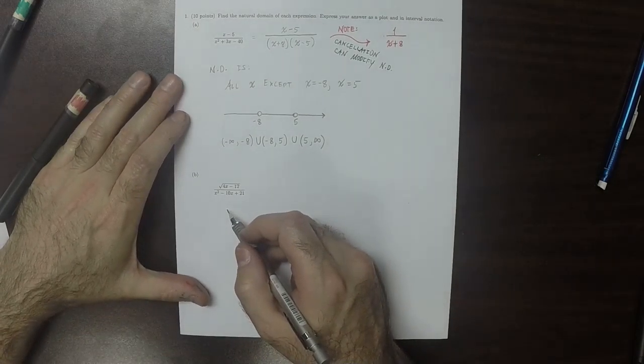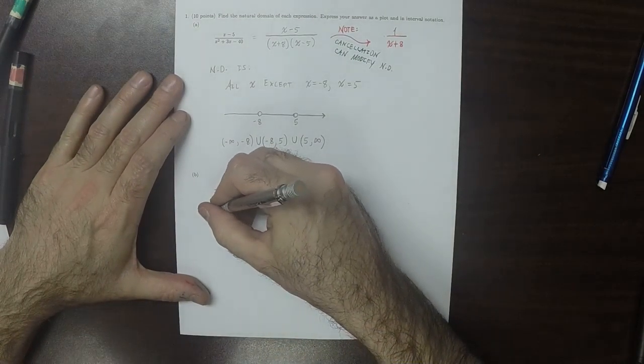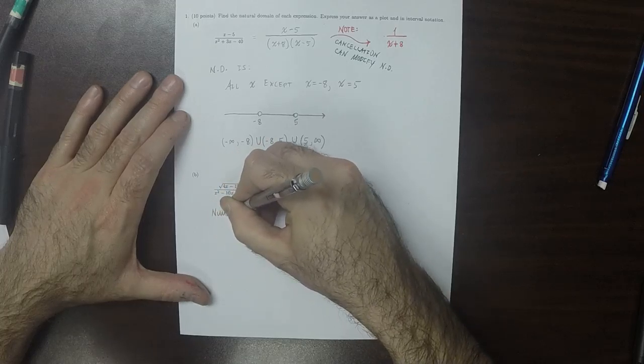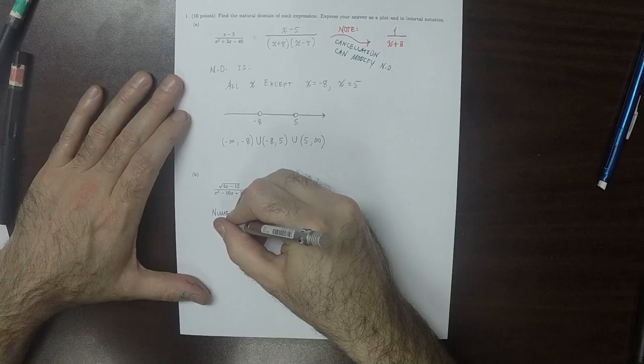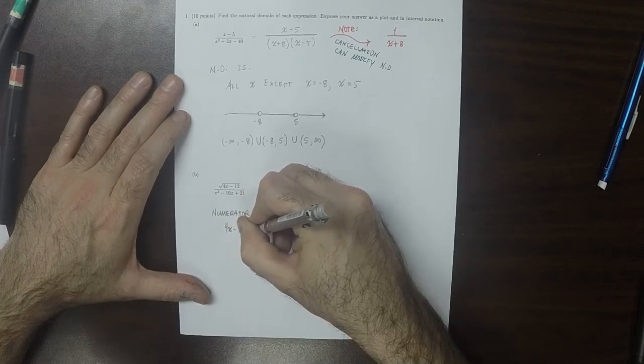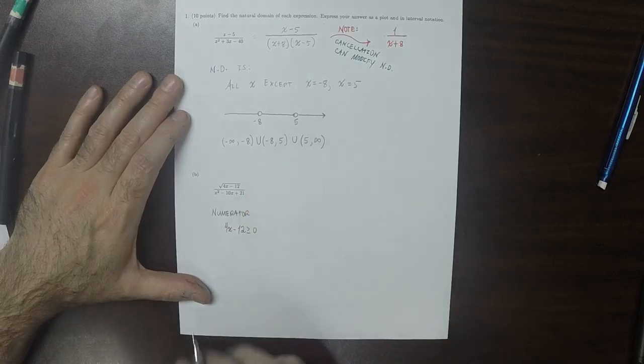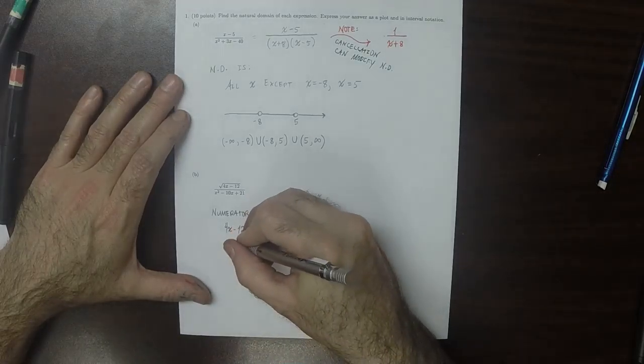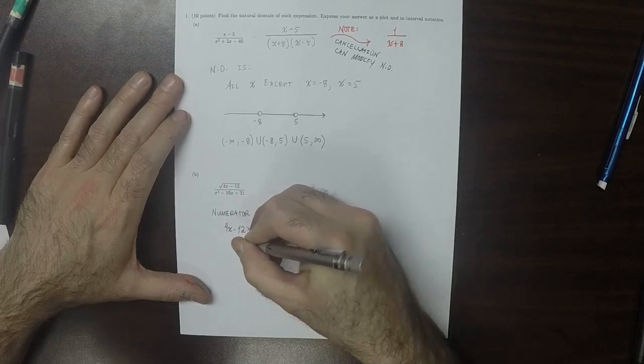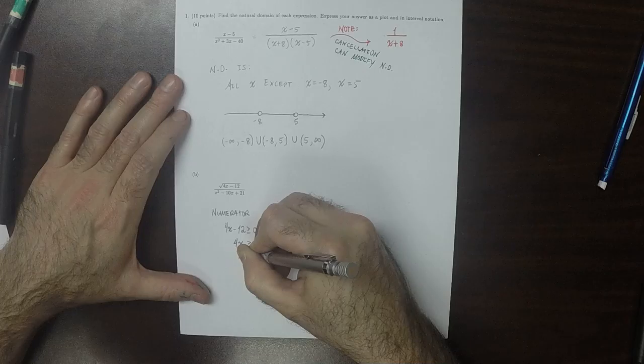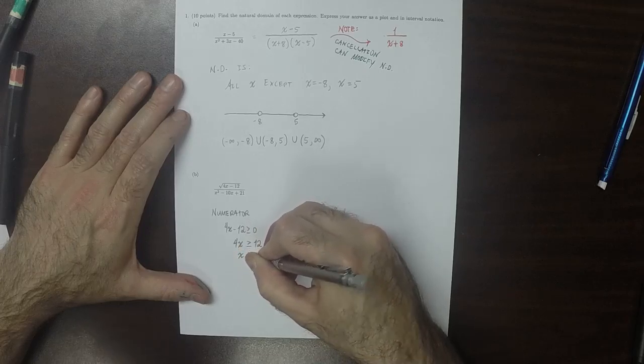Similarly, for part b, there's two requirements. As for the numerator, we need the argument to the radical to be non-negative, which is to say 4x minus 12 must be greater or equal to 0. So 4x must be greater or equal to 12. So x must be greater or equal to 3.